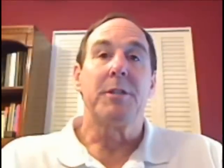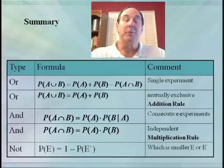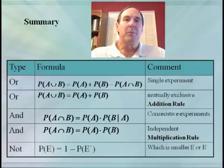Before we finish up, let's summarize what we've discussed. We have two addition formulas for OR, which we use for a single experiment, and two multiplication formulas for AND, which we use on multiple experiments. We use our formula for NOT when the complement is easier to compute than the original event. Note that both our addition and multiplication rules use the word AND, so you have to remember the context.